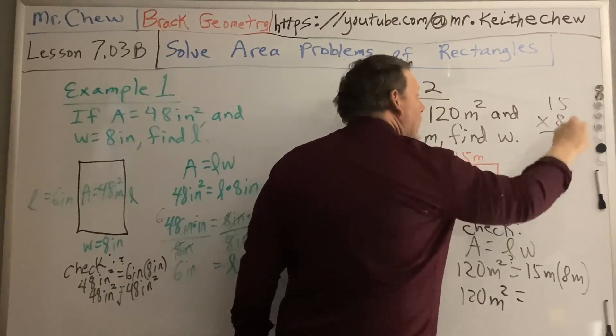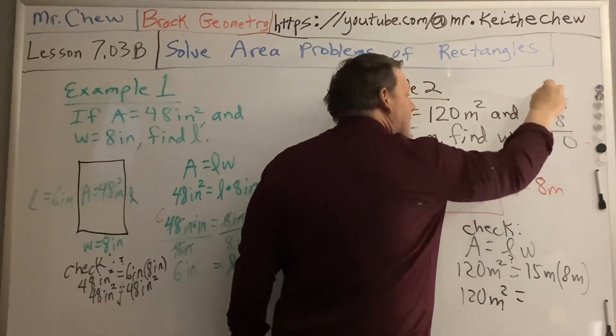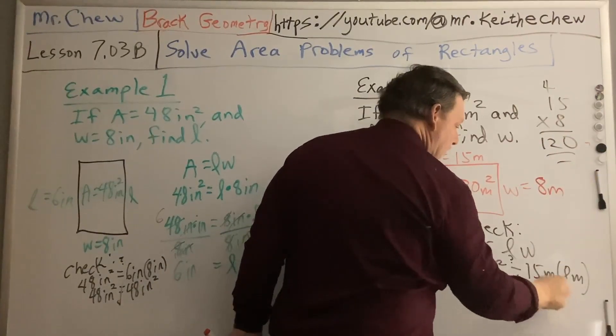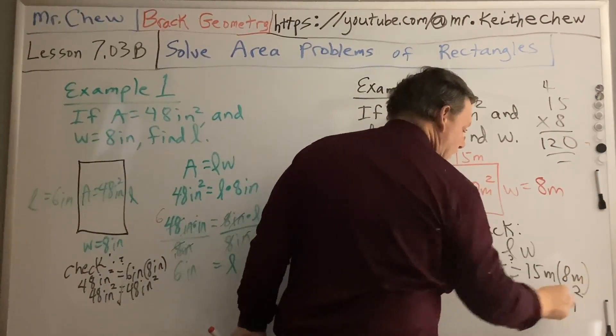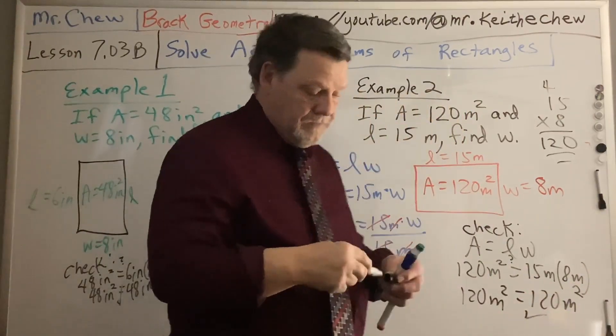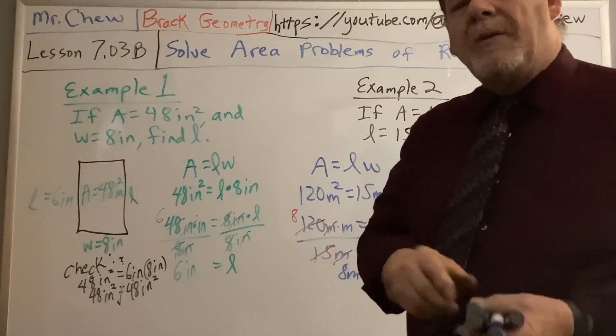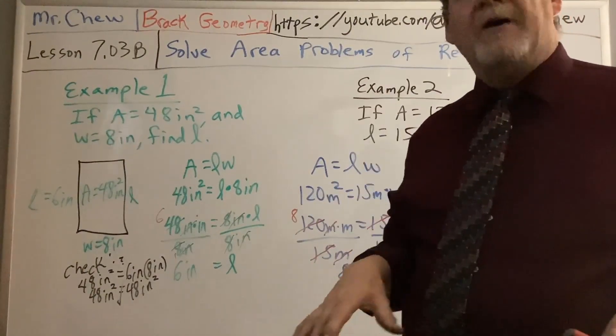So 120 meters squared equals 15 times 8. 8 times 5 is 40. Carry the 4. 8 times 1 is 8. Plus 4 is 12. And there is my 120 meters times meters is meters squared. So it checks out. So this wasn't too bad, but we're just building up to harder problems, and I want everyone to have a good foundation.